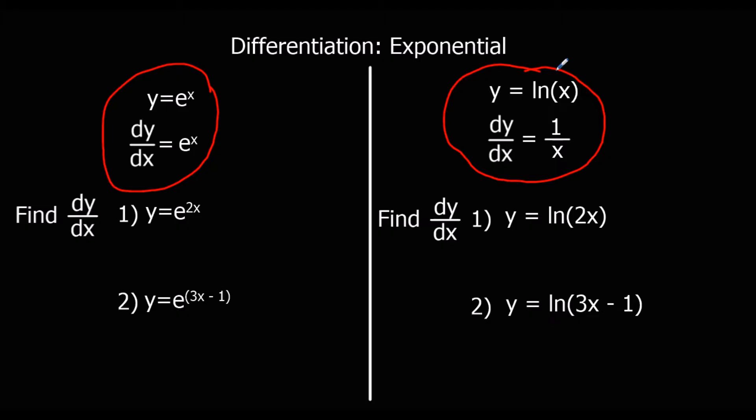When differentiating these functions, we apply the chain rule, the product rule, and the quotient rule. So two new bits of information and just applications of them involving the other rules.